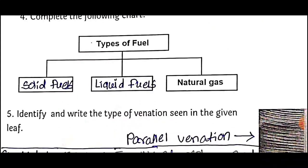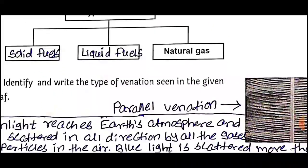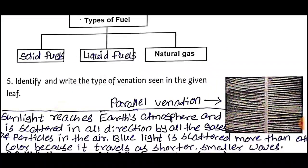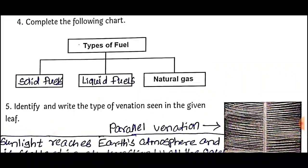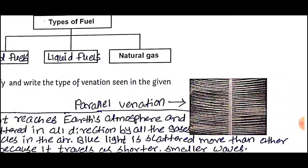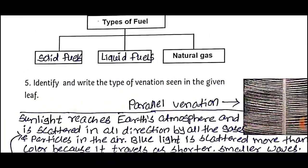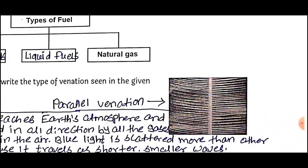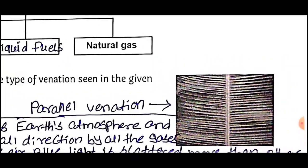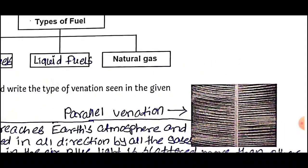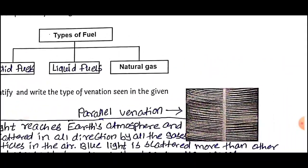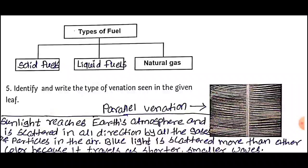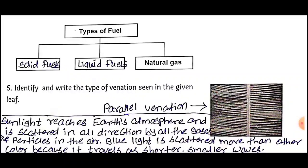Question Number 5: Identify and write the type of venation seen in the given leaf. You can see the leaf diagram here. The venation given in this leaf is Parallel Venation.